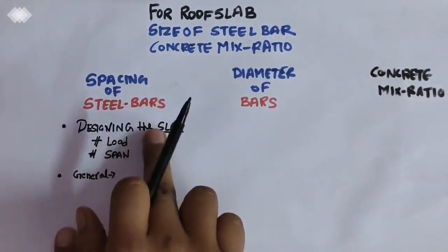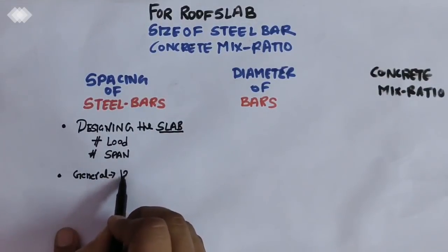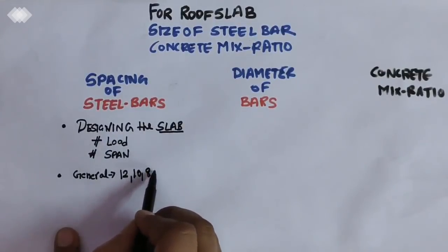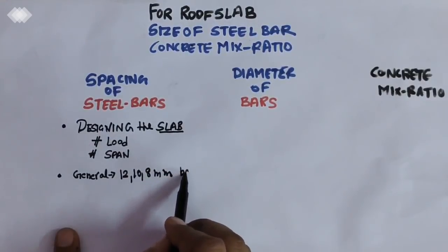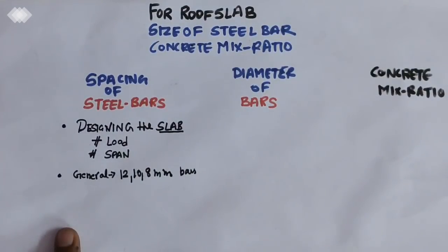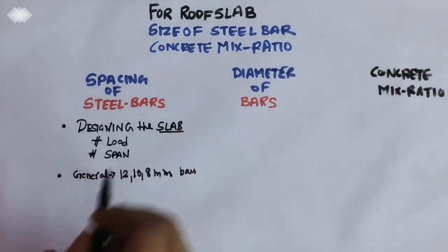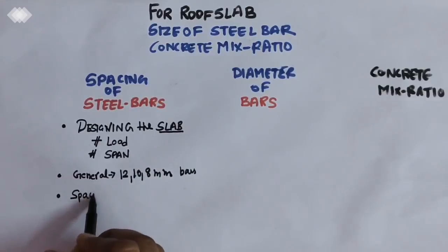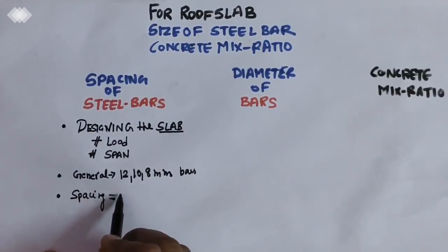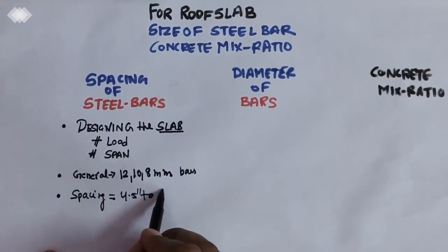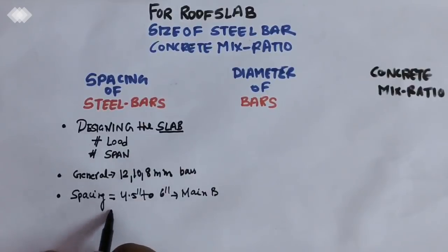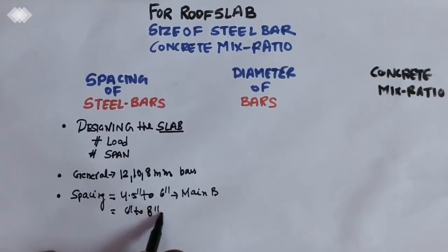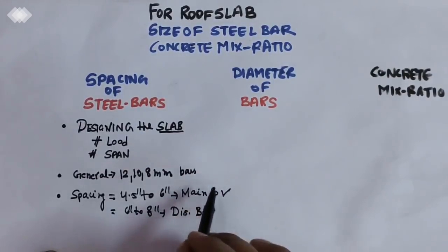Generally, we use 12mm, 10mm, or 8mm mild steel bars. The spacing for main bars is kept at 4.5 inches to 6 inches, and for distribution bars it is 6 inches to 8 inches.